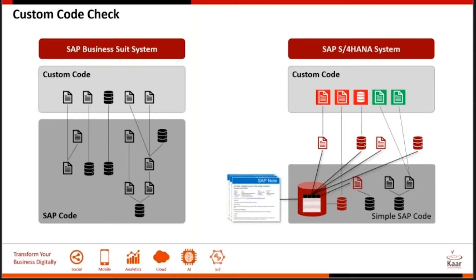The areas that could get affected include the material number field, pricing, and key tables like BKPF, BSEG, MKP, and MSEG, where you've already used all of these in your custom code. So when you have to adapt so much ABAP code, it is only prudent that you first clean up your custom code.